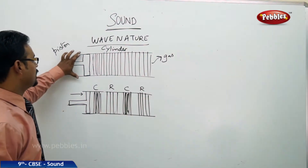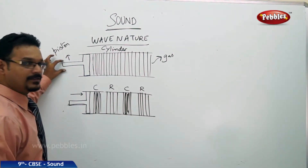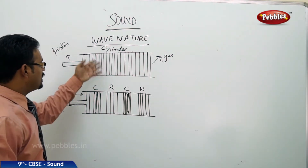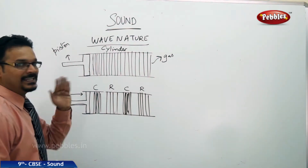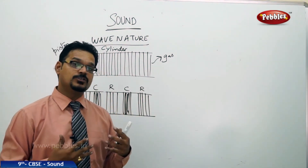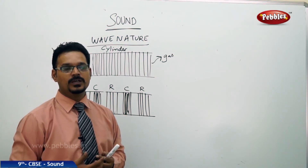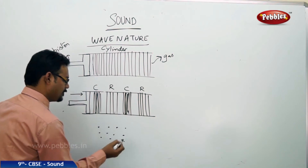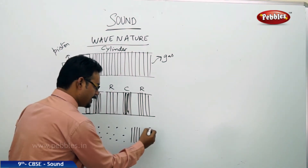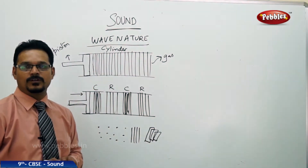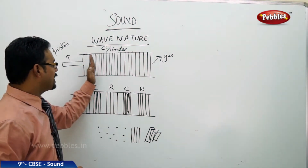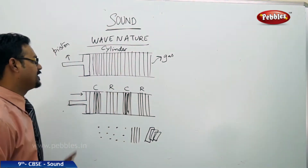We learned that sound is a longitudinal wave. Here is a cylinder — the cylinder has a piston and is filled with gas; you can take air as an example. All these lines in the diagram represent gas layers. Gas is a type of medium, and geometrically we can visualize it as gas particles, gas layers, or gas planes. Each line here is a gas layer, and so many gas layers are there in the cylinder. The piston is at rest — this is the initial state of the gas.